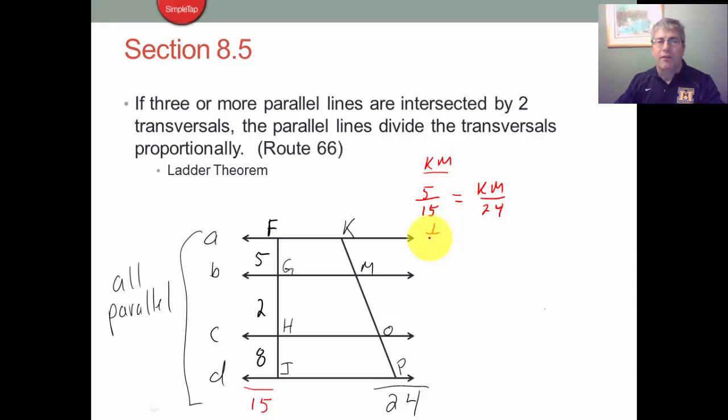Well, 5 out of 15 is 1 out of 3 as KM is to 24, and you can see that KM has to equal 8.